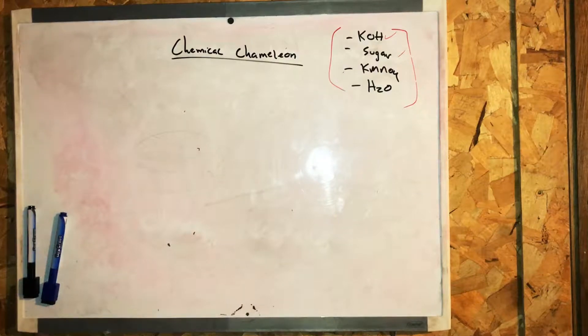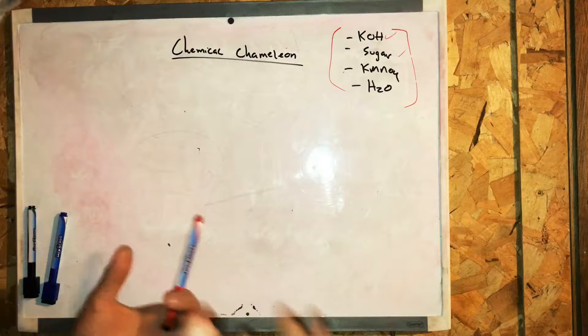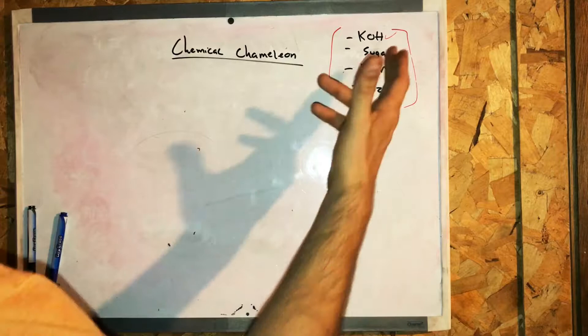To demonstrate the chemical chameleon, you need four main chemicals. First is potassium hydroxide - you need a high alkaline environment for this reaction to work properly. Then you need sugar as a second compound, then potassium permanganate.